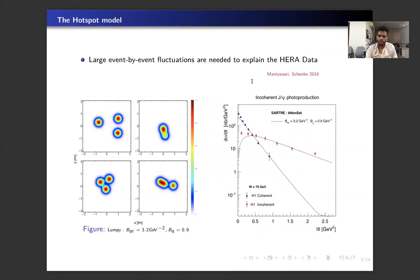Now to study the fluctuations, Heikki Mäntysaari introduced a hotspot model where the proton geometry consists of these three hotspots of gluon density, and they showed that for a lumpy configuration with large event-by-event fluctuation, they obtained good agreement with the HERA data.